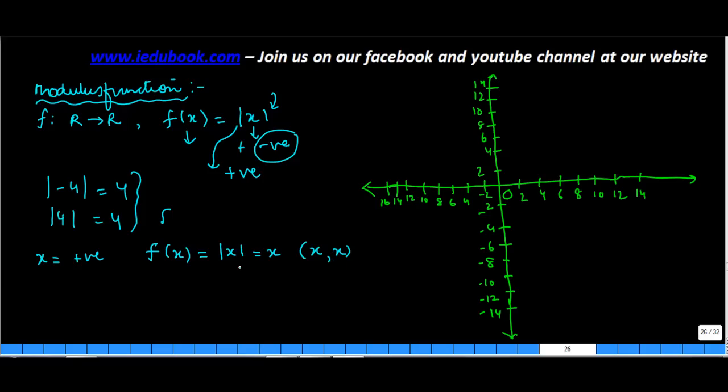And this will be true for all values greater than 0, greater than or equal to 0. So for x greater than or equal to 0, the coordinates will be (x, x).